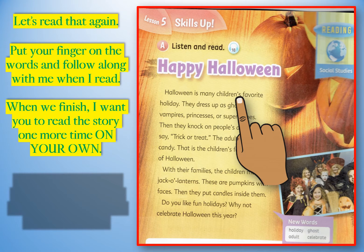Halloween is many children's favourite holiday. They dress up as ghosts, vampires, princesses or superheroes. Then they knock on people's doors and say 'trick or treat'. The adults give them candy. That is the children's favourite part of Halloween. With their families, the children make jack-o'-lanterns. These are pumpkins with faces. Then they put candles inside them. Do you like fun holidays? Why not celebrate Halloween this year?